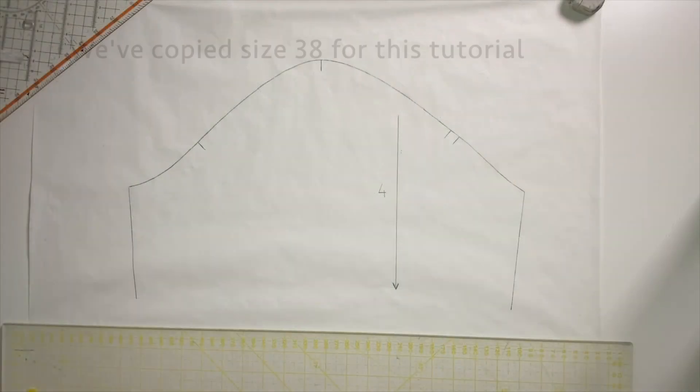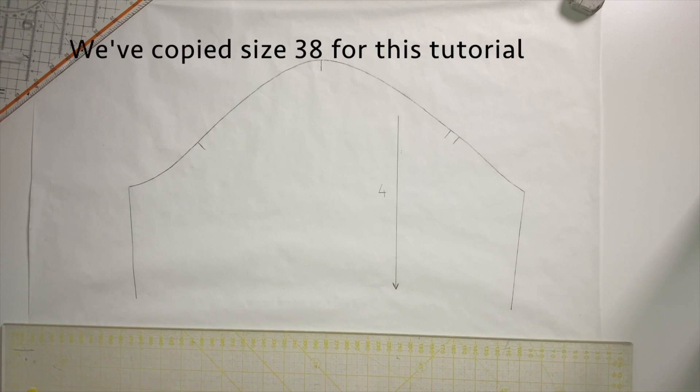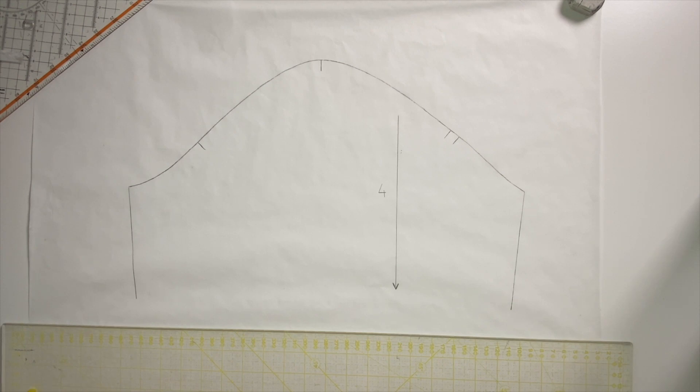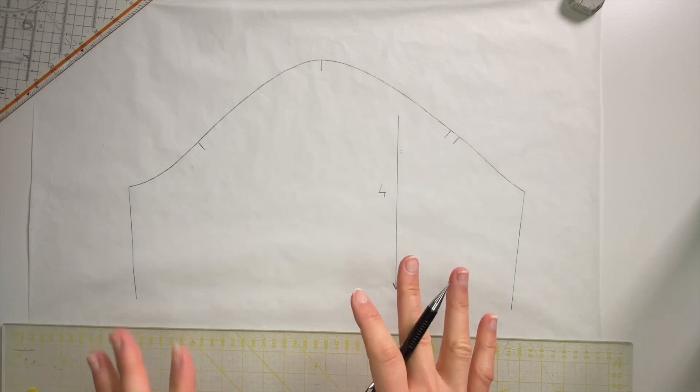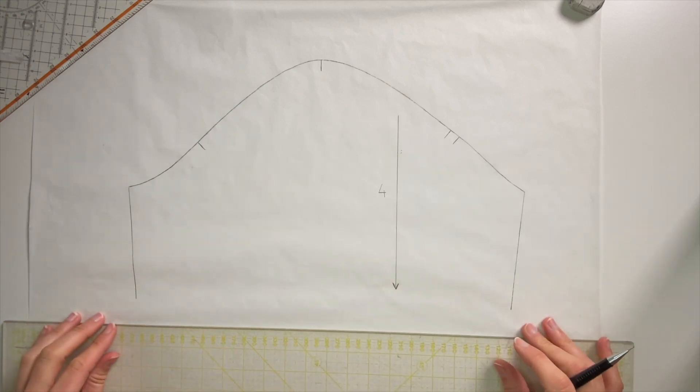Here you can see how I've copied the sleeve in a size 38, it's the standard size we work with. These are just stitching lines, so the sleeve head has been drawn for short and long sleeves alike, so we don't need to change anything there. So we can just make it longer and then we can add sleeve trim.